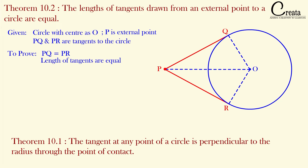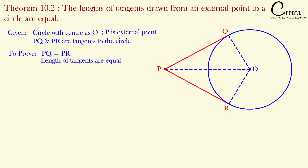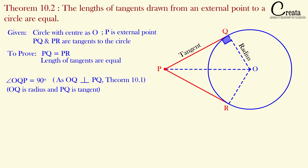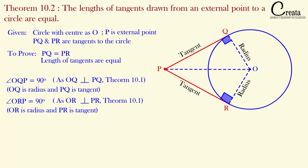That is, the radius and tangent are perpendicular to each other — the angle between the radius and tangent is 90 degrees. So here angle Q will be 90 degrees because OQ is the radius and PQ is the tangent. So this angle will be 90 degrees as per Theorem 10.1. Similarly, OR and PR — the angle R will also be 90 degrees, where OR is the radius and PR is the tangent.